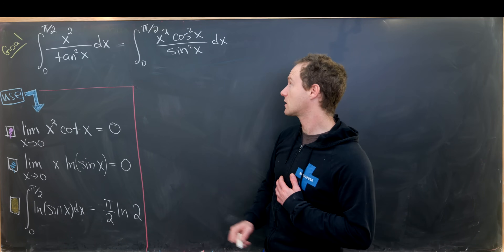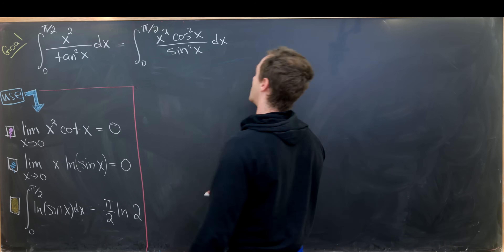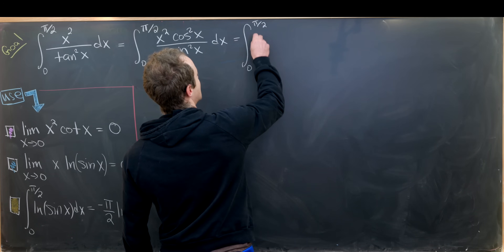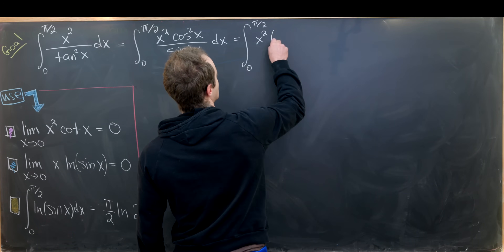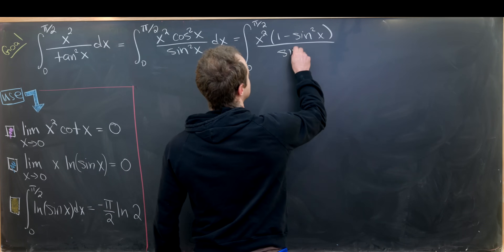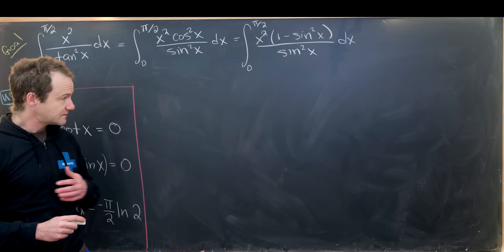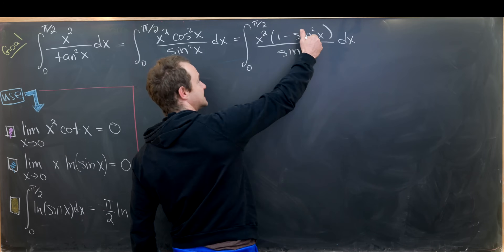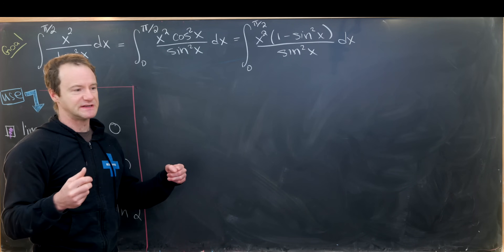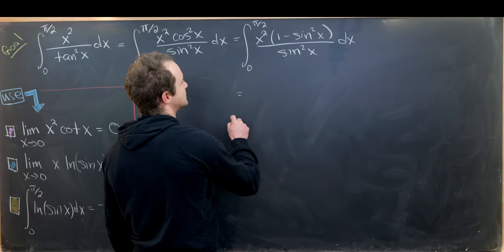Now I'll use the Pythagorean identity to rewrite cos²(x) as 1 − sin²(x), which gives ∫₀^{π/2} x²·(1 − sin²x)/sin²x dx. This is starting to look good.